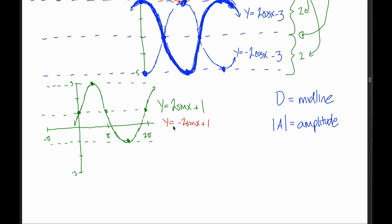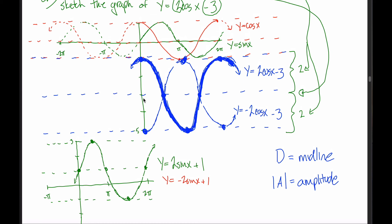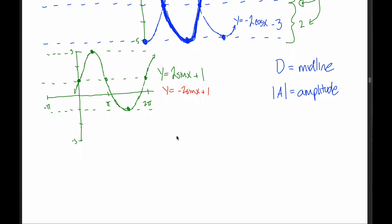Compare this with y equals negative 2 sine of x plus 1. The midline is still at 1, the amplitude is still 2, and the dashed lines are the same. But the negative flips the orientation — for the sine graph, we still start in the middle, but instead of heading up we head down. This maximum value corresponds to this minimum, and this minimum corresponds to this maximum; points on the midline stay exactly where they were.